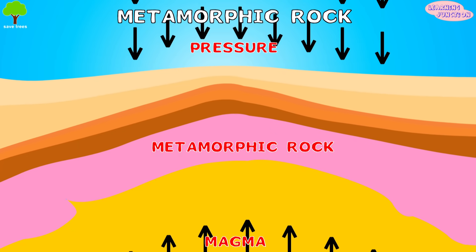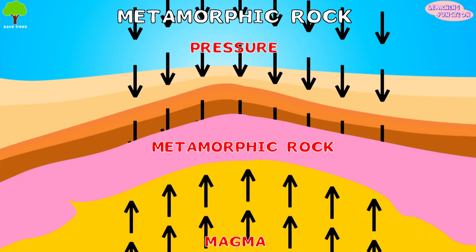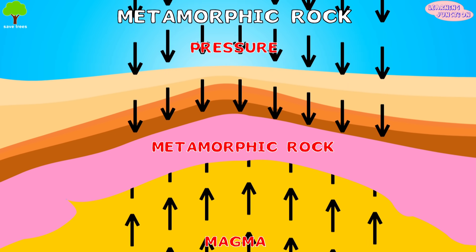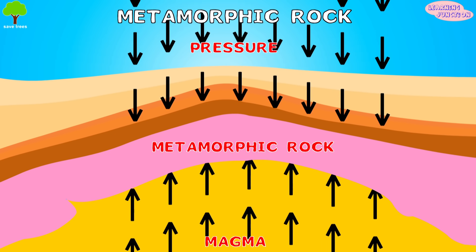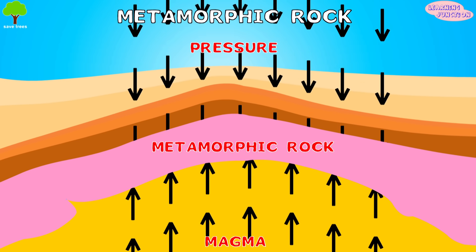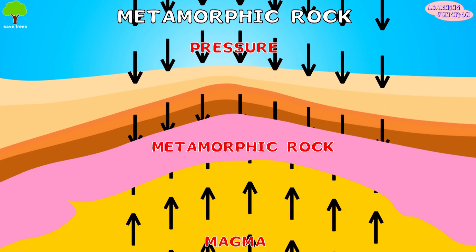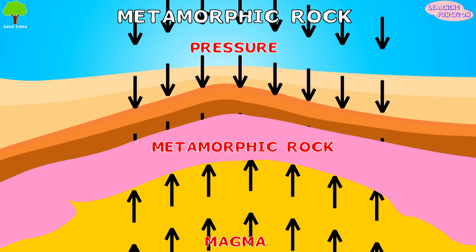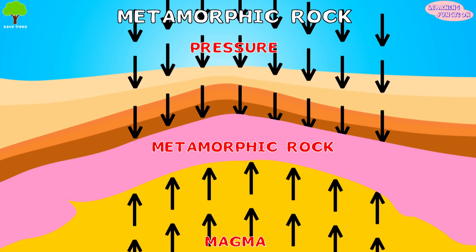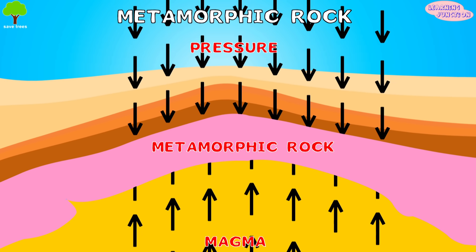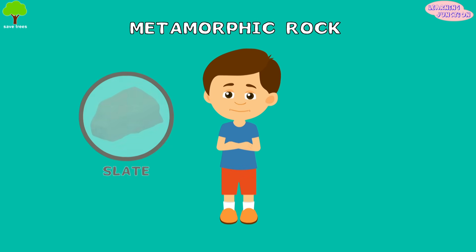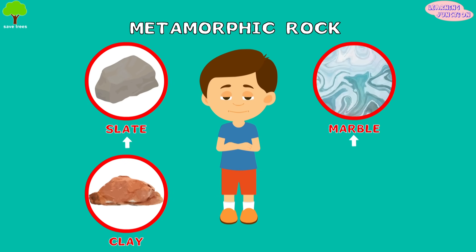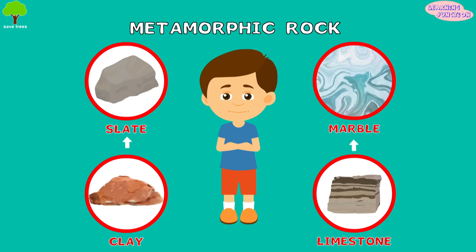Metamorphic rocks. These are the changed forms of igneous and sedimentary rock. They're formed by great heat and pressure. They're generally found inside the Earth's crust, where there's enough heat and pressure to form the rocks. For example, slate changed from clay, and marble changed from limestone.